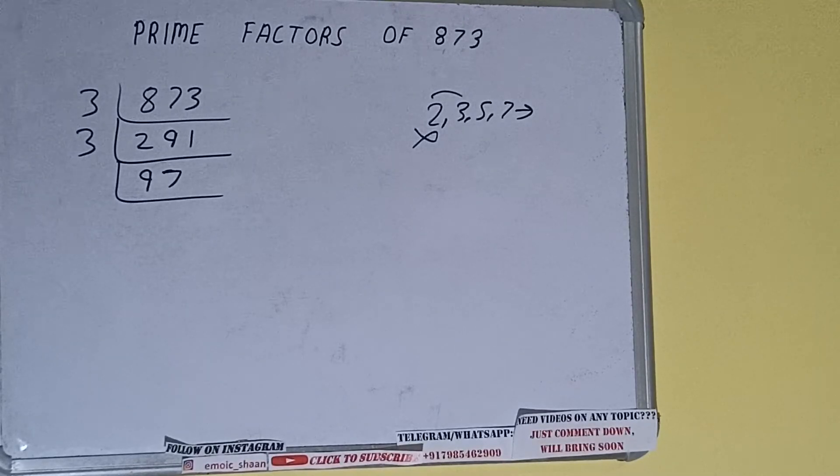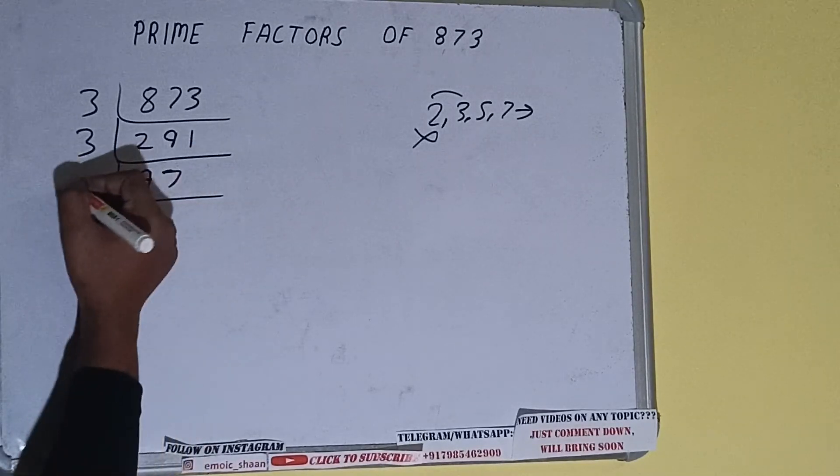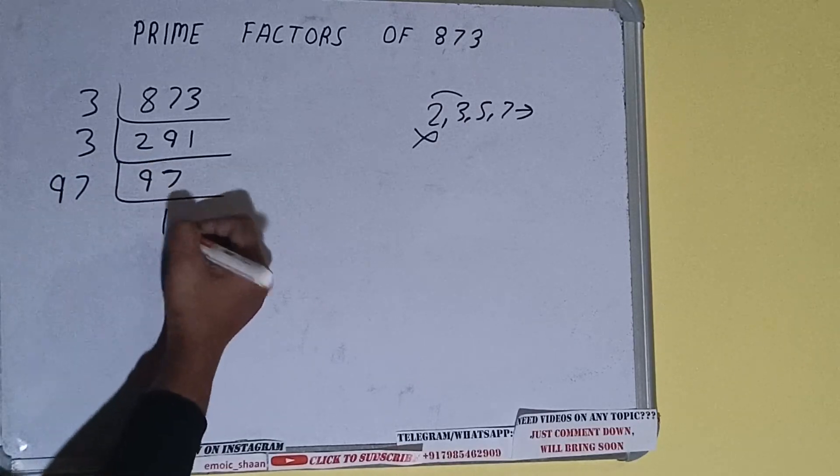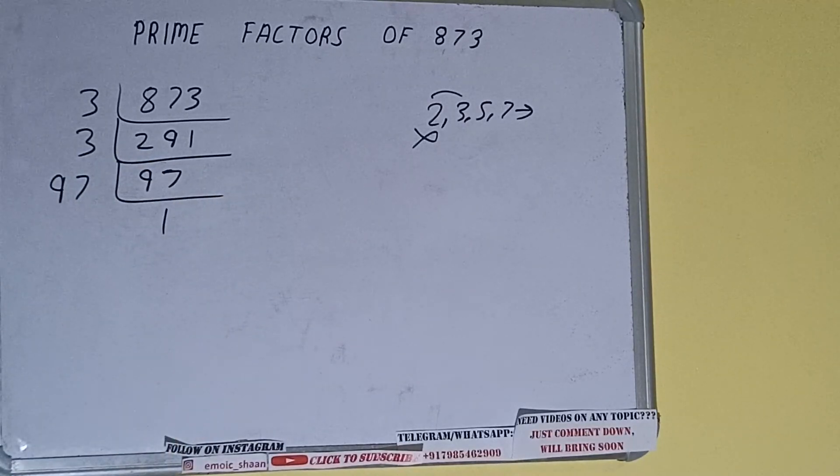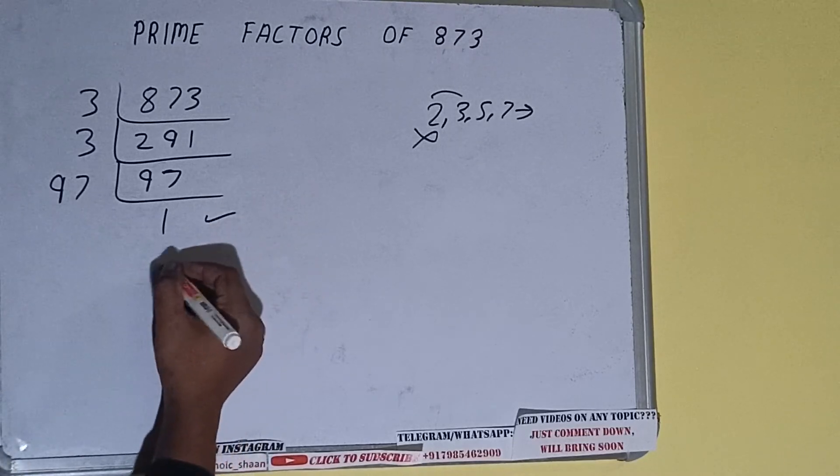And ninety-seven is also a prime number, so it is only divisible by itself, that is ninety-seven. And once we do so, we'll be getting one. Once we get one, we need to stop and do one last thing.